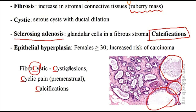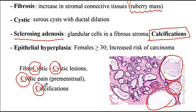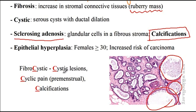Fibrocystic disease is a cystic lesion that presents with cyclic pain — the pain is worse before menstruation — and you will see calcifications on the mammogram. So: fibrocystic disease is a cystic lesion that presents with cyclic pain and calcifications.